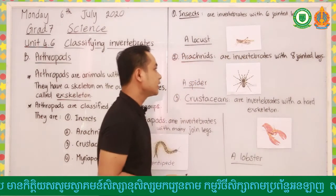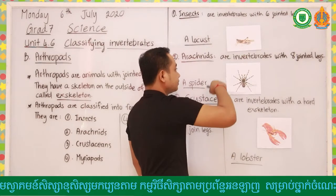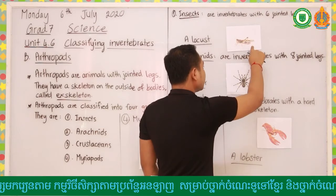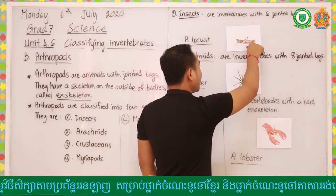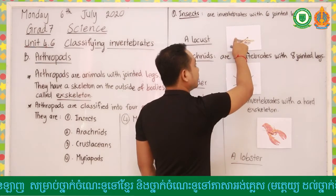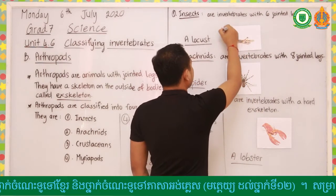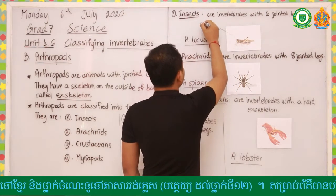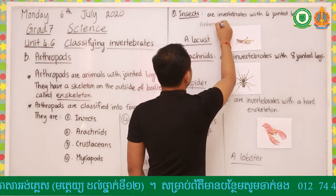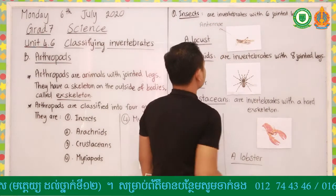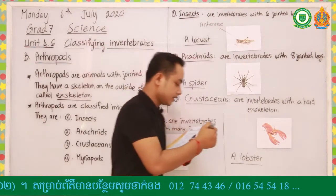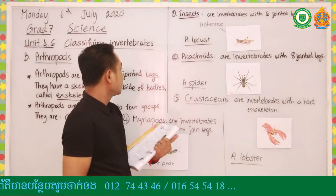You can see six jointed legs with the body right here. The body is segmented, and it has a pair of wings and a pair of antennae. So this is called antennae - you can say the locust has one pair of antennae.